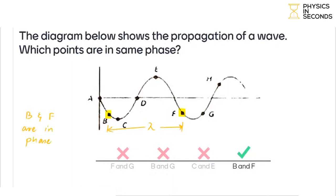If we have two points with a distance of lambda, 2 lambda, 3 lambda and so on, we can say that the two points separated by a distance of n lambda are in phase. The value of n is 0, 1, 2, 3 and so on. So these points are in phase.